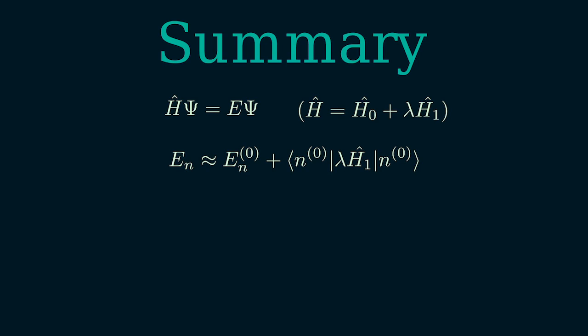Then we did something quite similar for the eigenstates. We used the Taylor expansion up to first order, then derived an expression for n1. Inserting it here gives us the final approximation for the eigenstate.